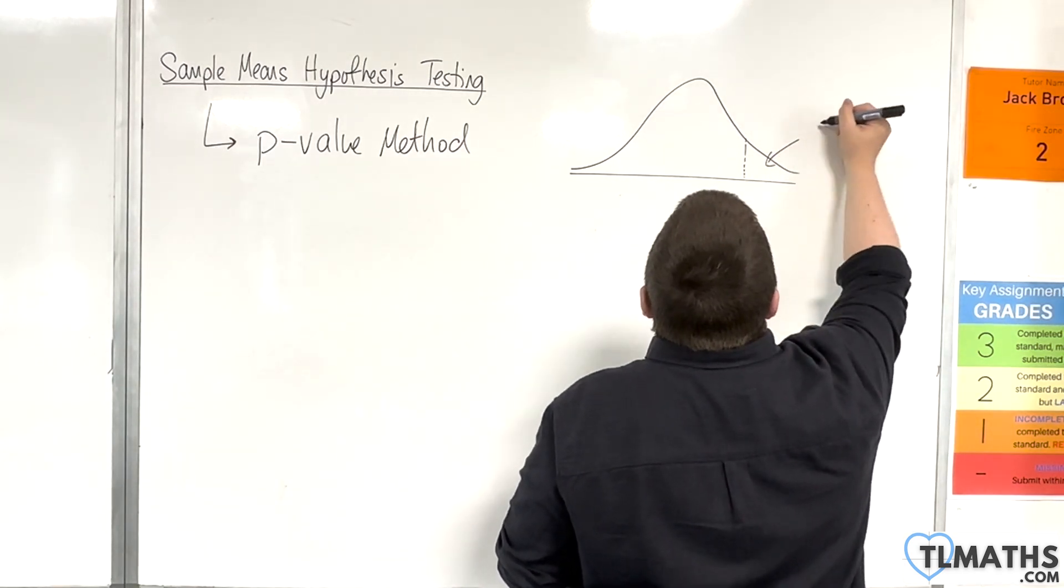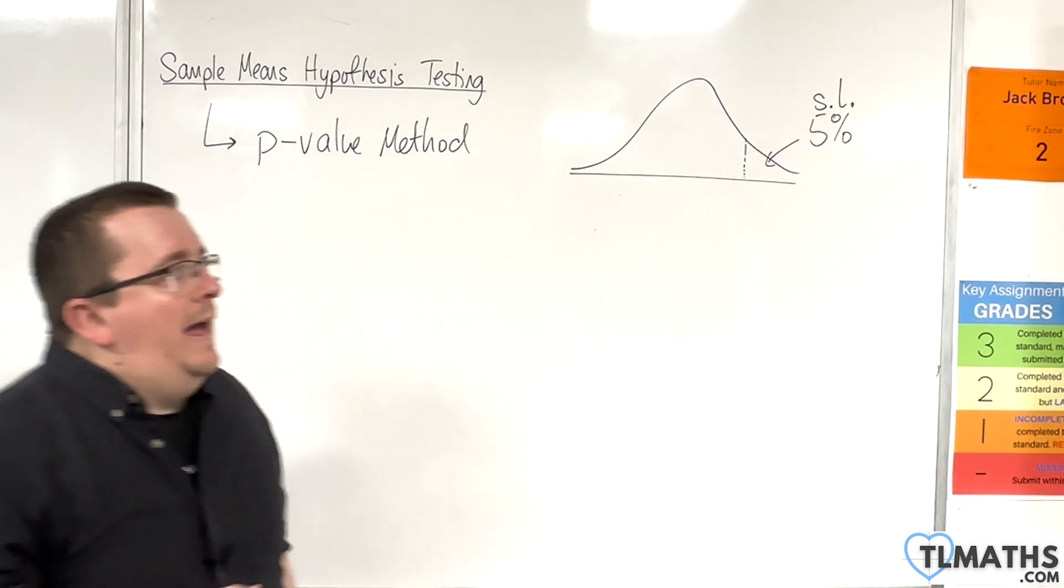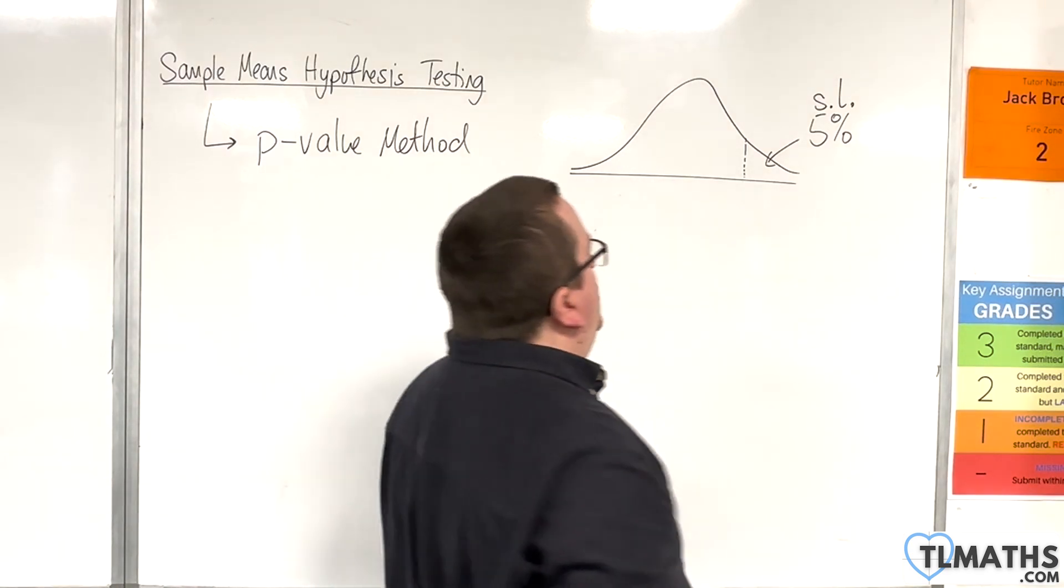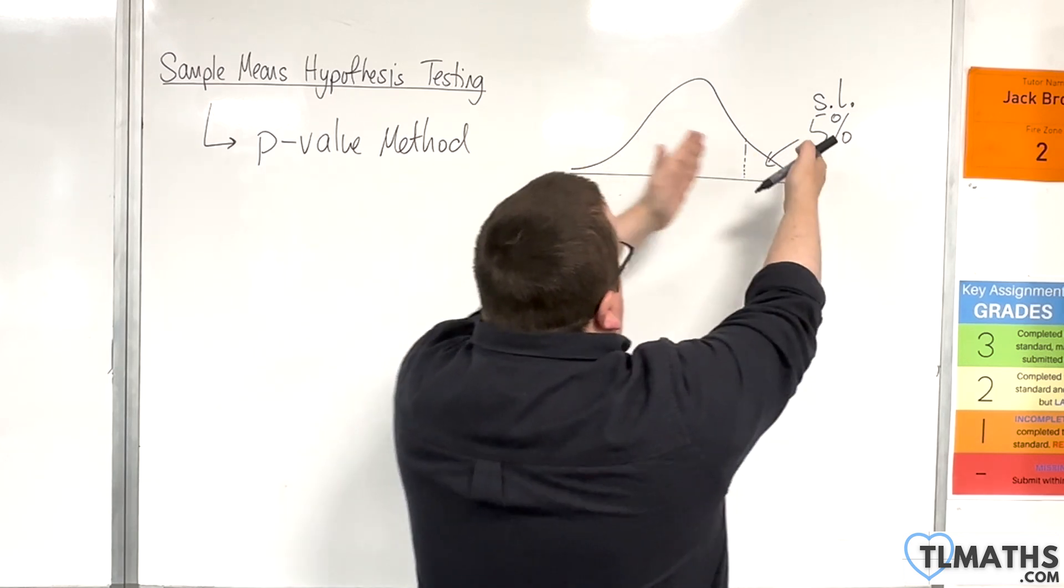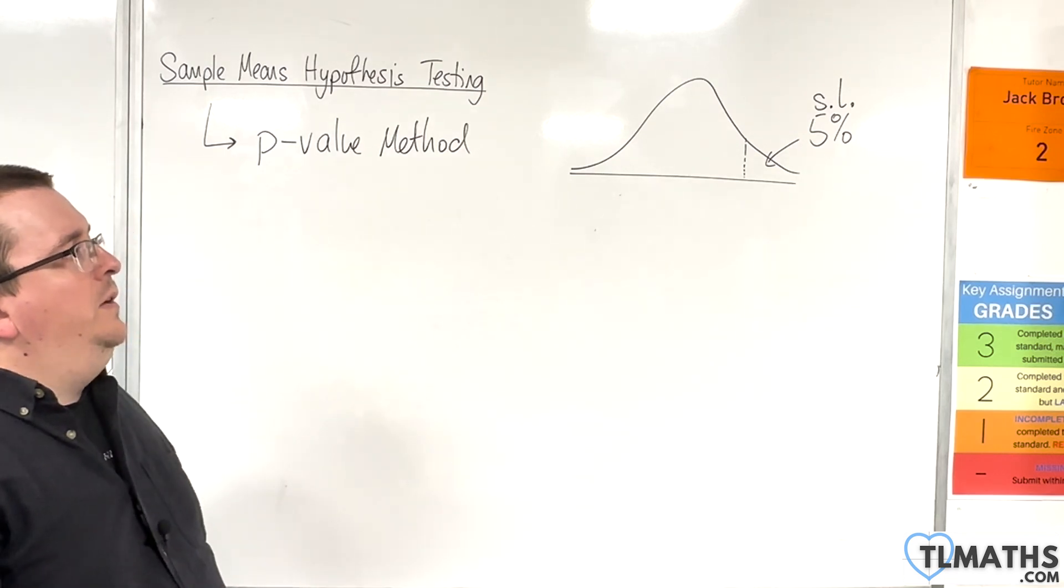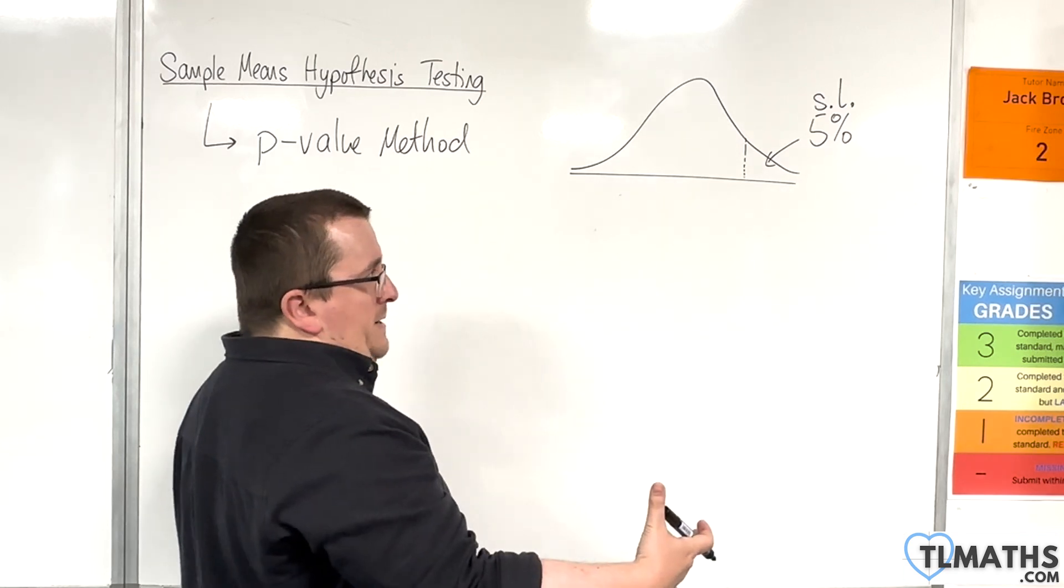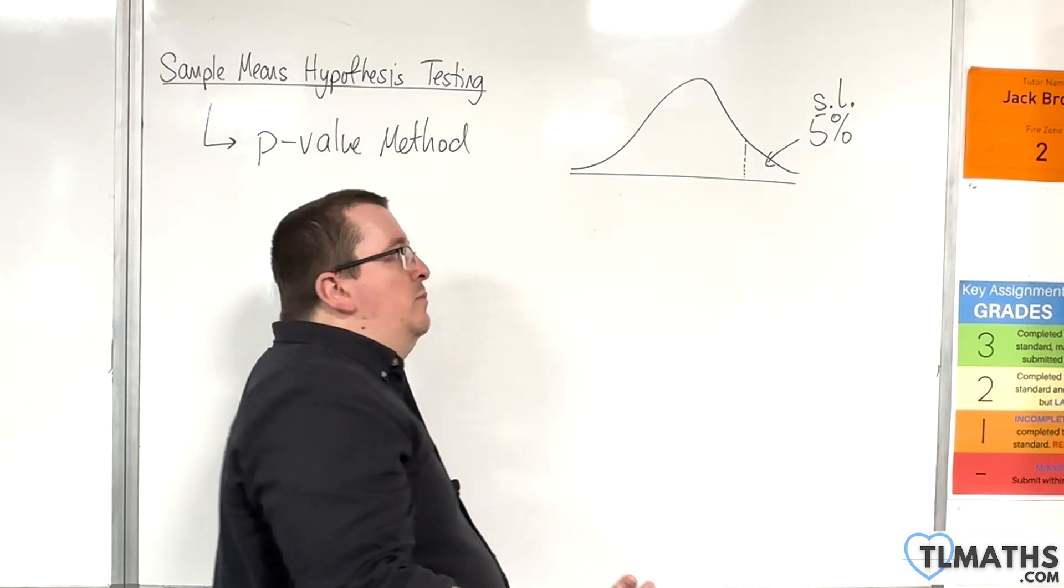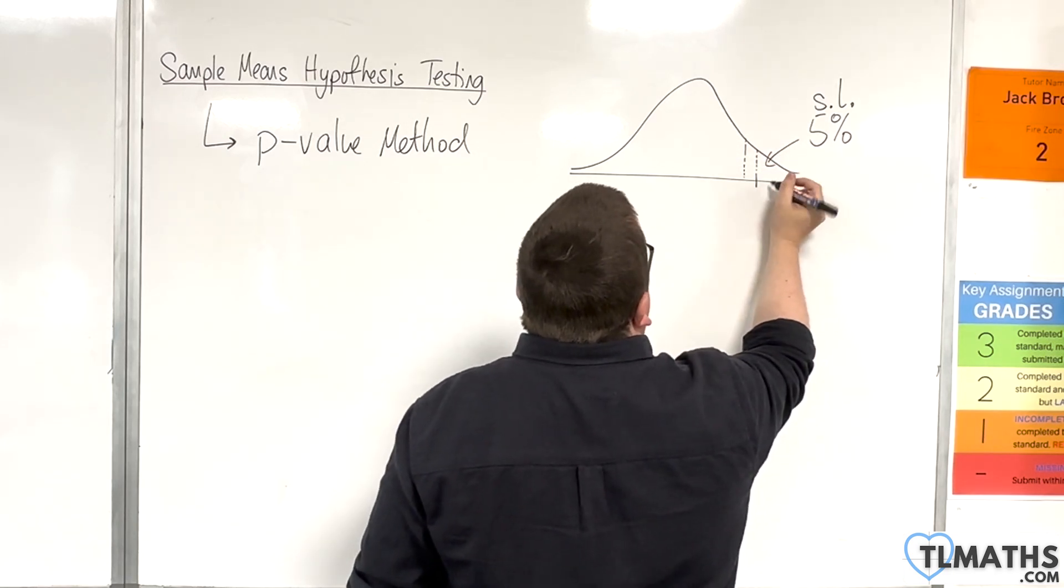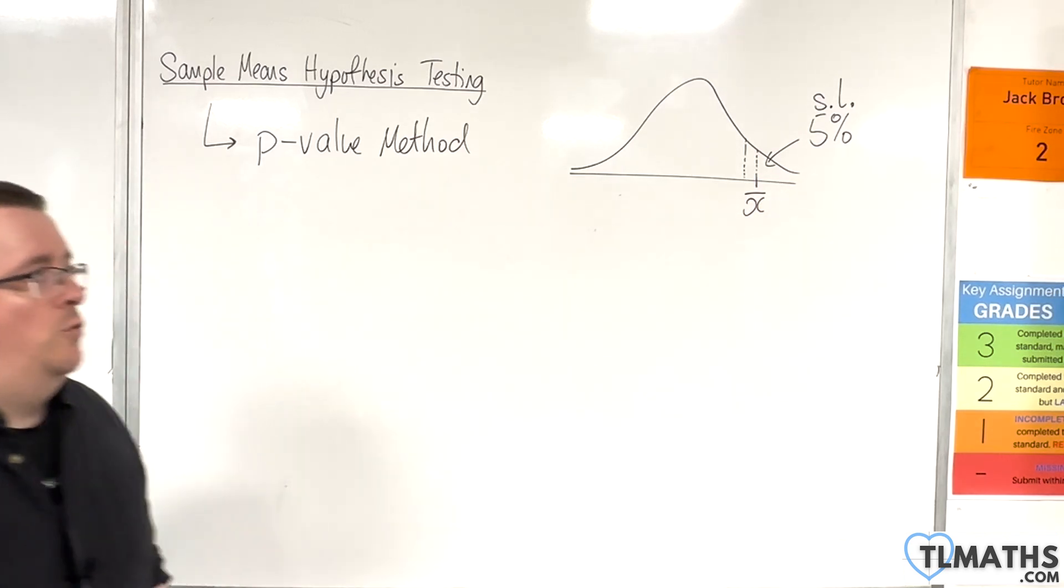Here is your normal distribution, and within the question, you are told a significance level. So, let's say the significance level is 5%. So, this is your significance level. And what that means is that there is a 5% tail in your normal distribution. Now, you know, for argument, it could be down here, it could be up here, it could be a two-tail test. But let's just imagine it's up here for the moment. Your sample mean might be this value here. So, let's say this is your x-bar that you have calculated, or is within the question.